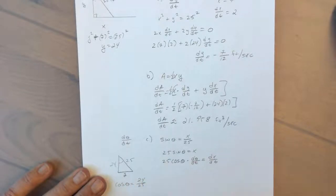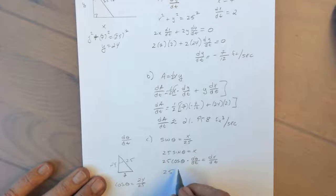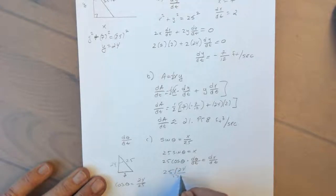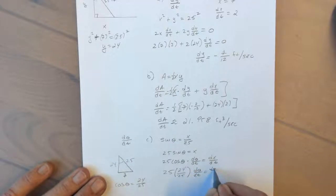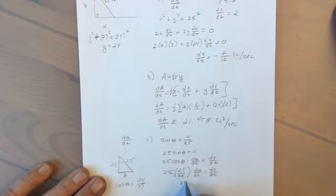So we have 25 times the cosine of theta, which is 24 over 25, times d theta/dt is equal to dx/dt. So we end up with 24 d theta/dt equals dx/dt, which we know is 2.